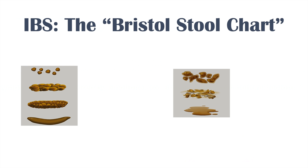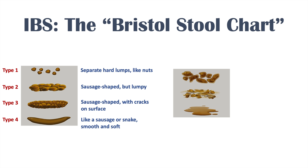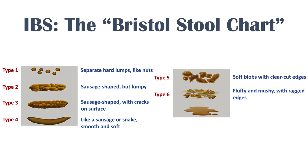The Bristol stool chart is a way we can describe a bowel movement. There are seven different types. Type 1 is separate hard lumps like nuts — essentially what we call rabbit poop — and is considered constipation. Type 2 is sausage-shaped but lumpy. Type 3 is sausage-shaped with cracks on the surface. Type 4 is smooth and soft, like a sausage or snake — generally a normal bowel movement. Type 5 is soft blobs with clear-cut edges. Type 6 is fluffy and mushy with ragged edges. Type 7 is watery and entirely liquid — essentially diarrhea.